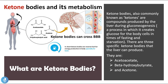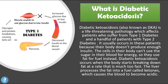Now that we know what ketone bodies are, let's take a closer look at diabetic ketoacidosis. Diabetic ketoacidosis, also known as DKA, is a life-threatening pathology which affects most patients who suffer from type 1 diabetes and a handful of patients who suffer from type 2 diabetes.